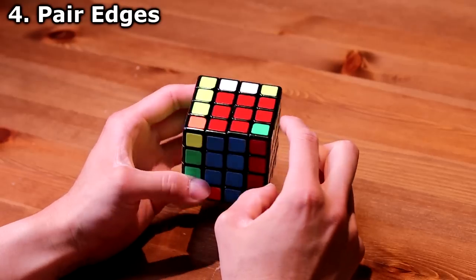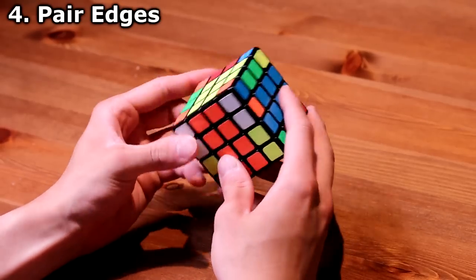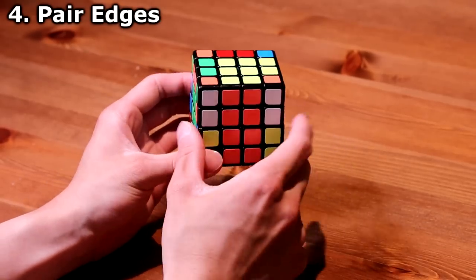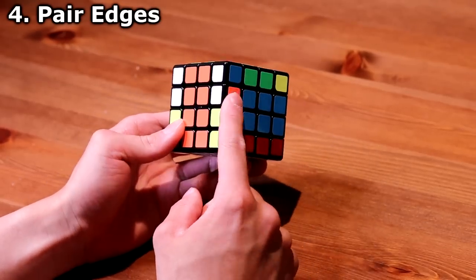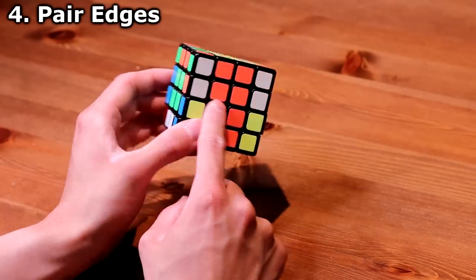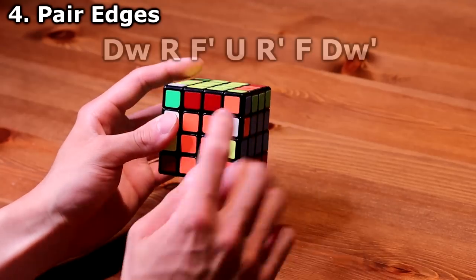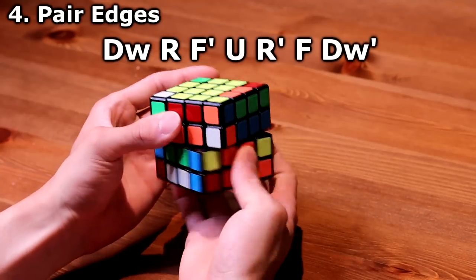Now you should either have all the edges solved, or you could have two remaining edges that are left. If you have two remaining edges, you want them on the same layers. What you want to do is have them both on the front face. You are going to do this algorithm,